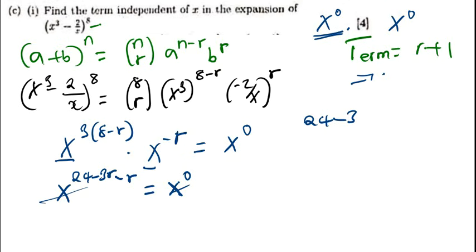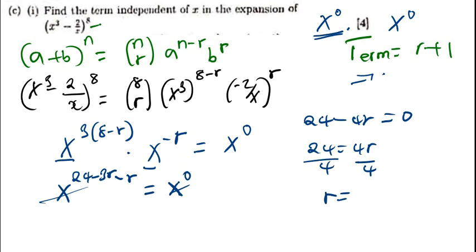So if the bases are the same, we cancel the base and equate the powers equal to each other. So that becomes 24 minus 3r. What is negative 3 minus 1, which is going to be negative 4r, equals 0. So 24 equals 4r, divide by 4. So r is going to be equal to 6.